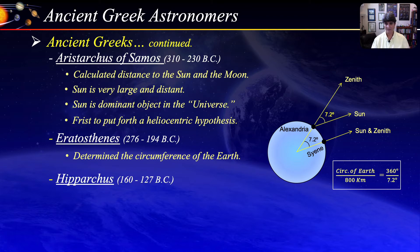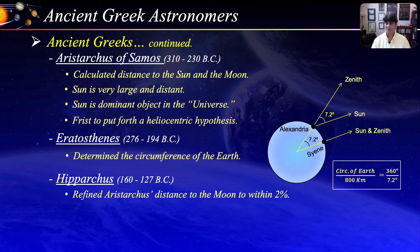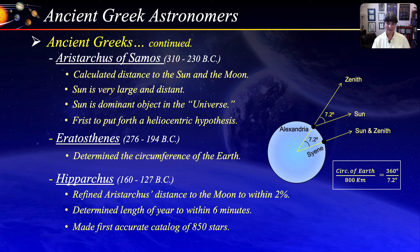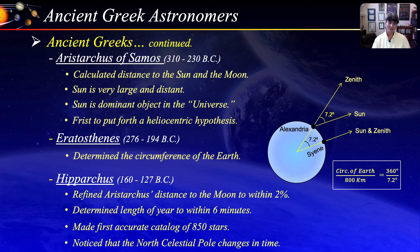Lastly we come to Hipparchus. He is perhaps the greatest astronomer in antiquity. He refined Aristarchus' distance to the Moon to within 2 percent error of the actual value. He determined the length of the year to within 6 minutes, and he made the first accurate catalog of 850 stars, including their positions and apparent brightness. His measurements were so accurate that he noticed that the direction of the north celestial pole gradually changes with time.